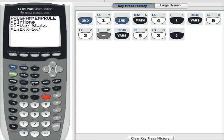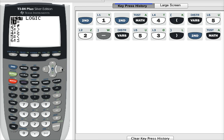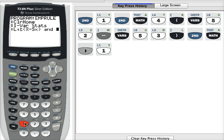I need to get the word AND in there, but I don't want to type the word AND. I need to use the logic operator. So you have to press the second button, math button, right arrow. Option number 1 is AND.